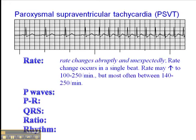There's a rate change which is abrupt and it happens unexpectedly — that's what paroxysmal means. The rate changes occur in a single beat, which is unique compared to, say, a change in heart rate that we experience when we have an adrenaline rush. When someone cuts you off on the highway and your heart starts pounding, on a monitor you would see a change over four or five beats, rather than the abrupt change in a single beat we see in PSVT.